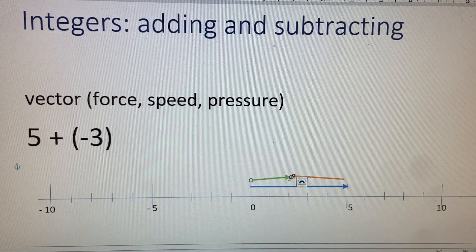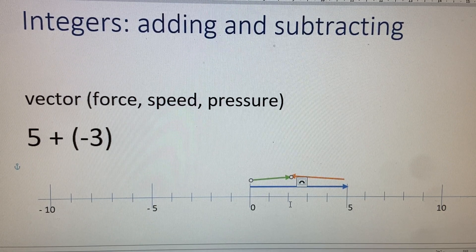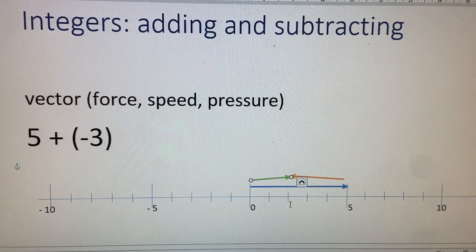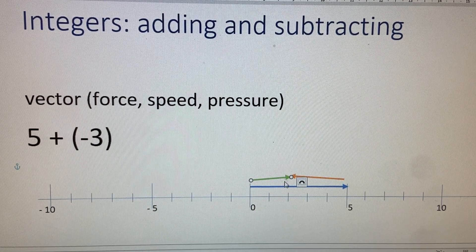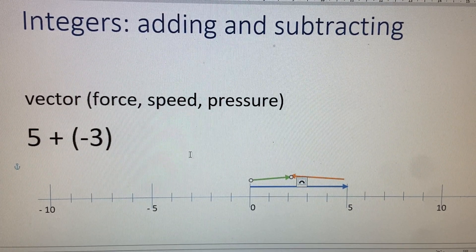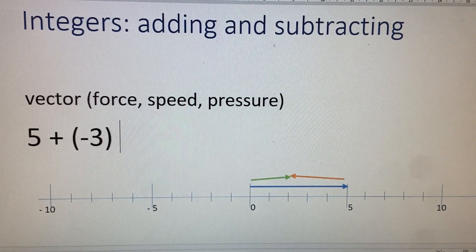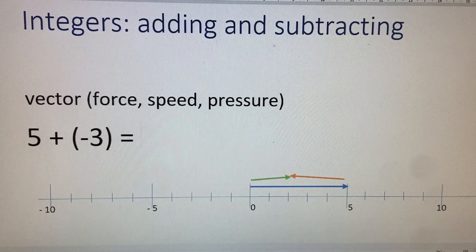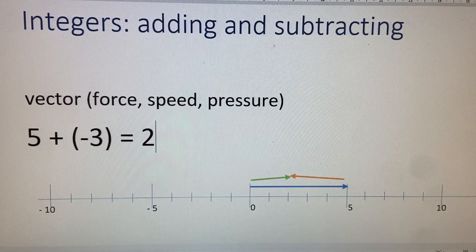They don't perfectly line up or lay flat thanks to Mr. Gates. So the resultant vector here is two units long in the positive direction. And how that's written is a positive two.